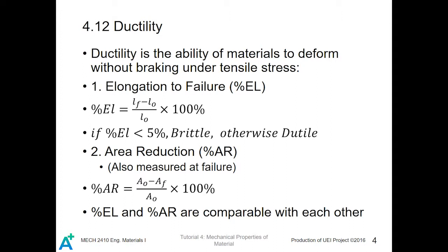Ductility is the ability of material to deform without breaking under tensile stress, and we have two methods to measure it. The first one is the elongation to failure, percentage EL. Percentage EL means the final length at failure minus the original length, over the original length times 100%.